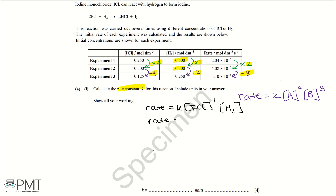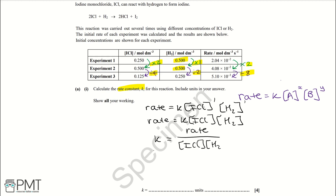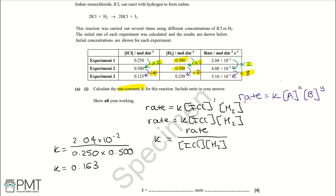We can rewrite the rate equation as: rate equals K multiplied by [ICl] multiplied by [H2]. Rearranging, K equals rate divided by [ICl] times [H2]. Using the data from experiment one: K equals 2.04 times 10 to the negative two, divided by 0.250 times 0.500. That gives a K value of 0.163.